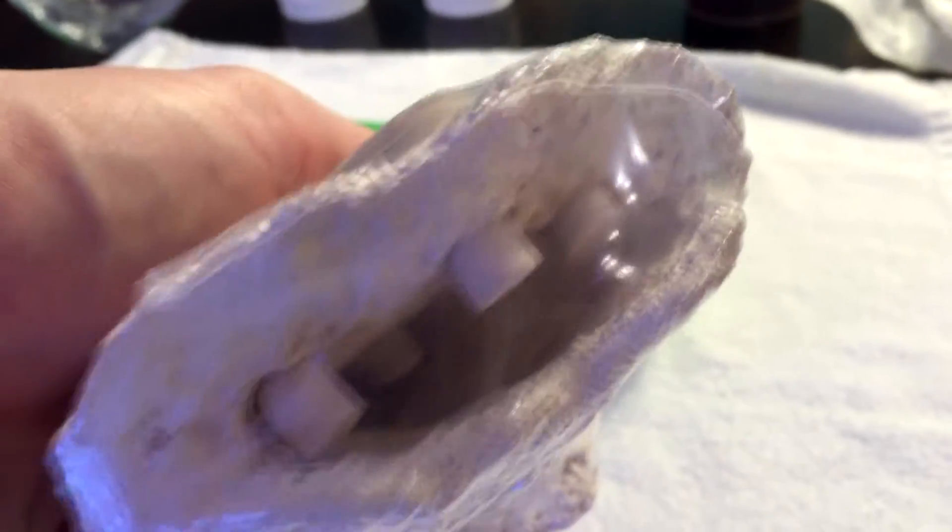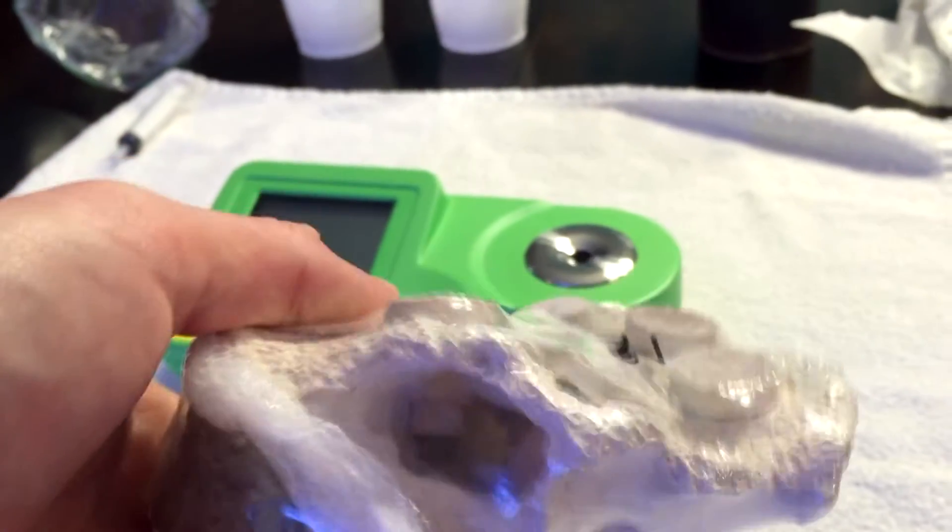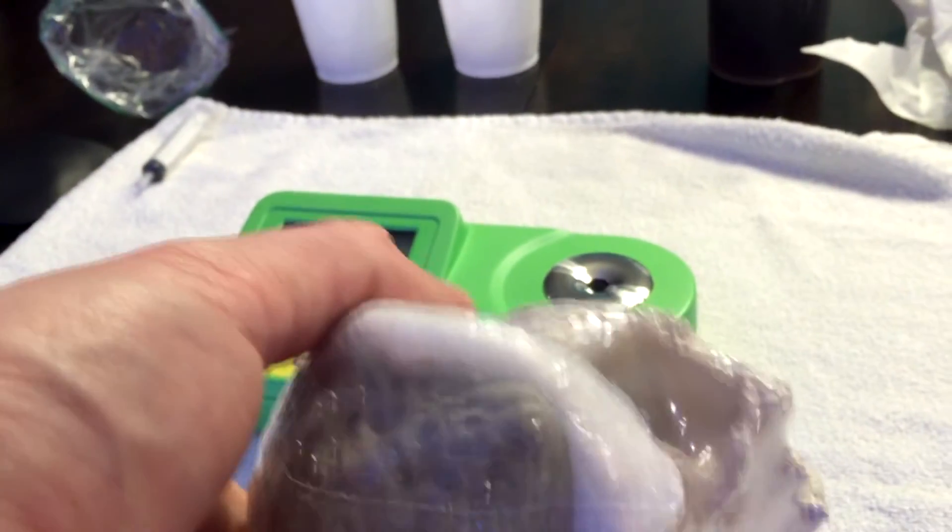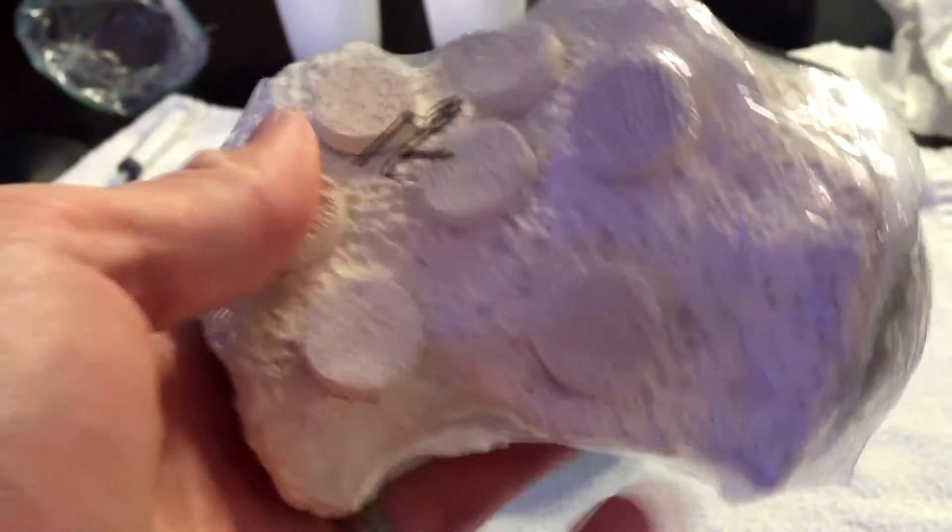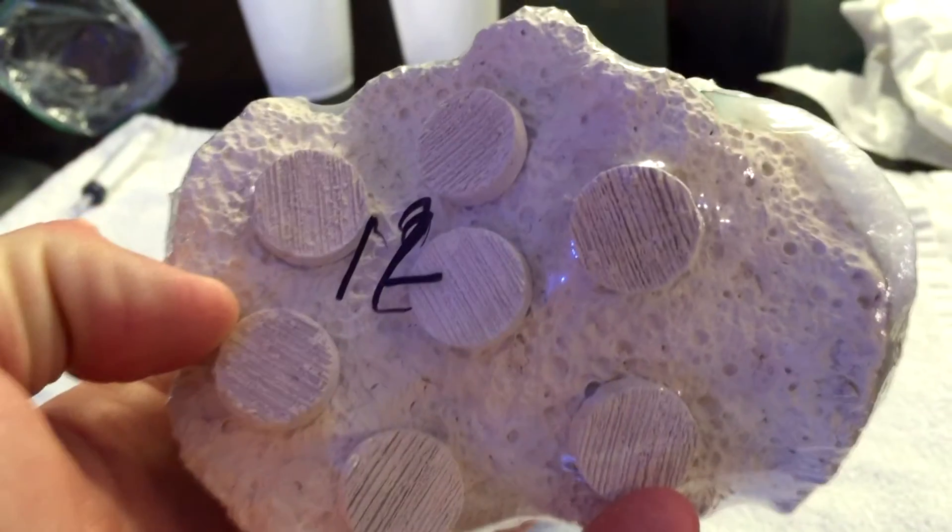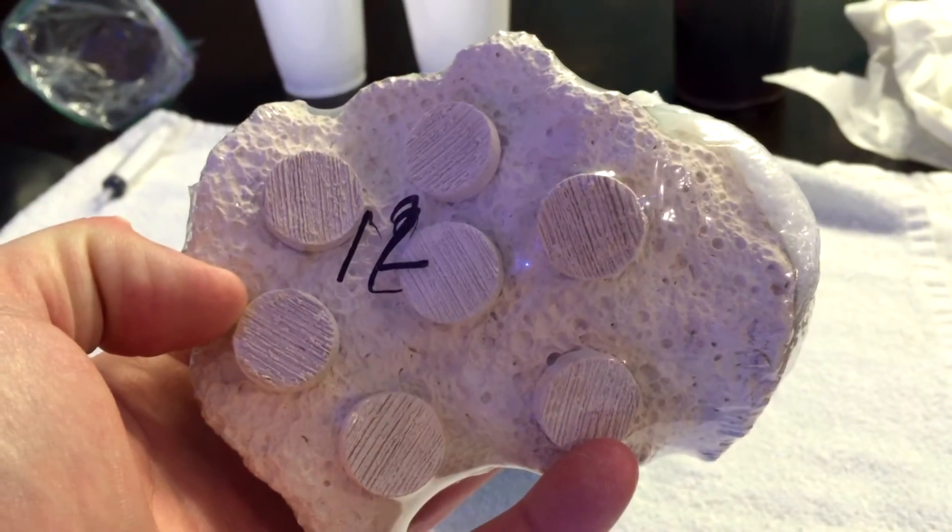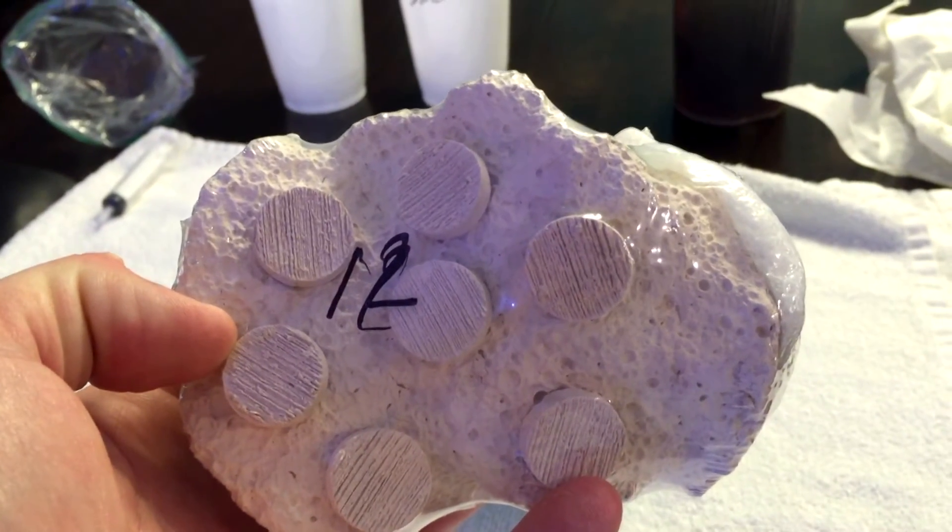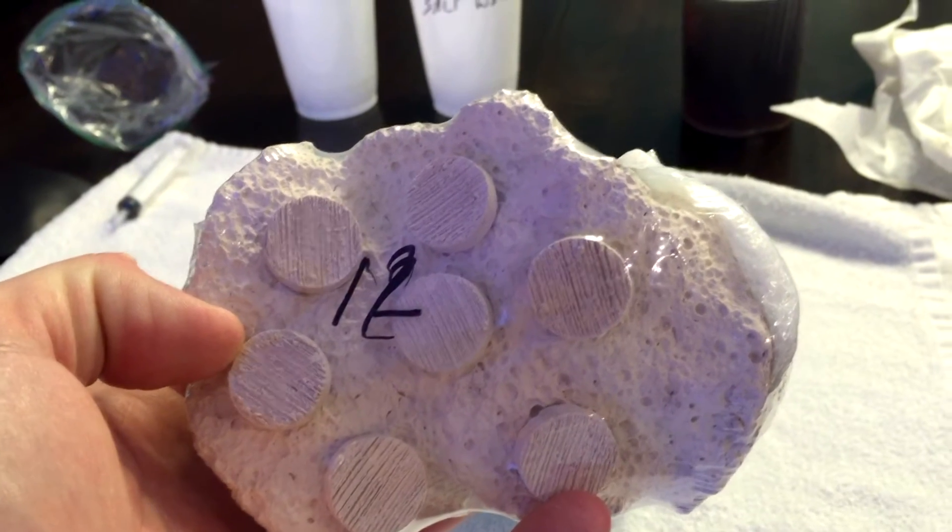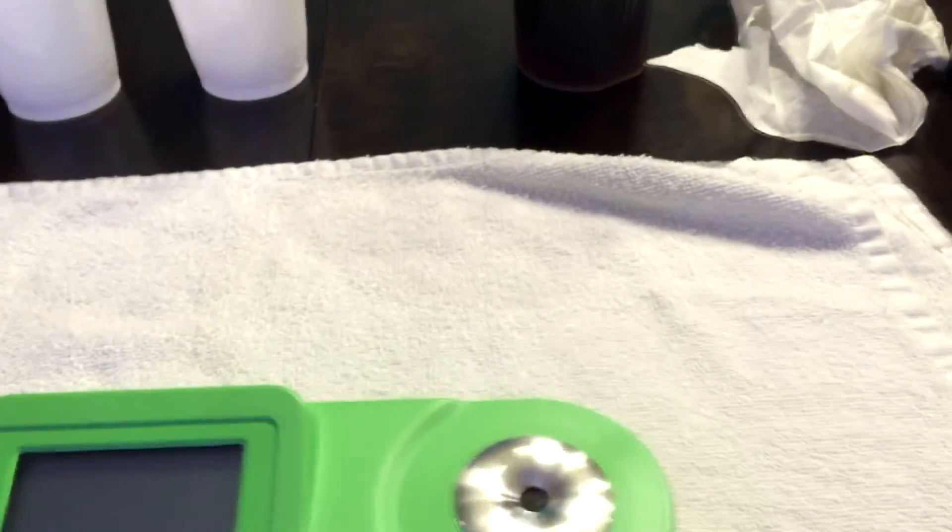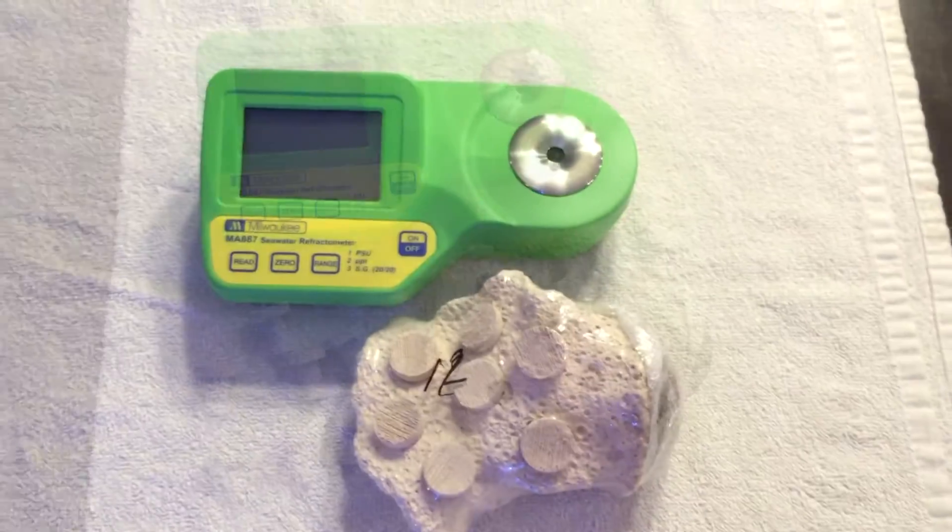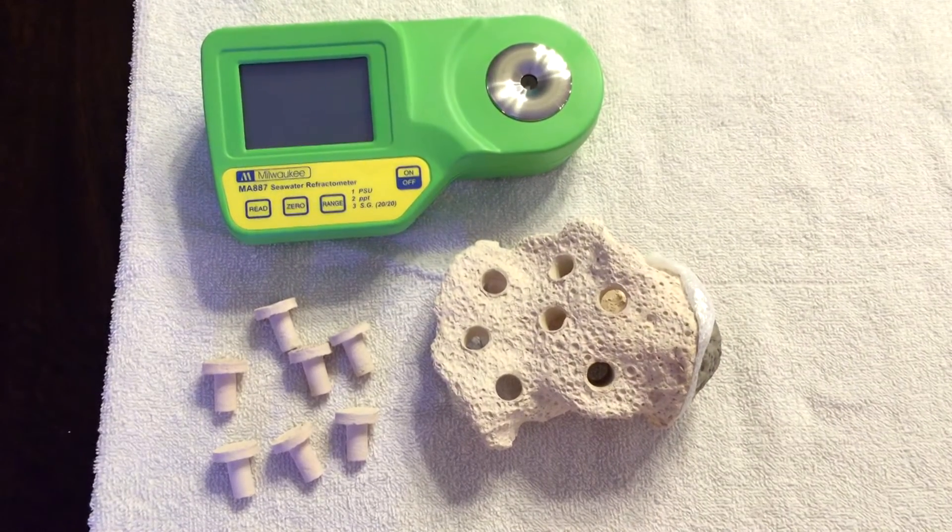I didn't really know what to expect. You think about acrylic frag racks and they're kind of just an eyesore to the tank. With this tank being in the living room I wanted something that was going to look professional and natural inside the tank. I decided to pull the trigger on it and I'm happy with it. It's well built, the magnet's super strong, and it's really heavy.